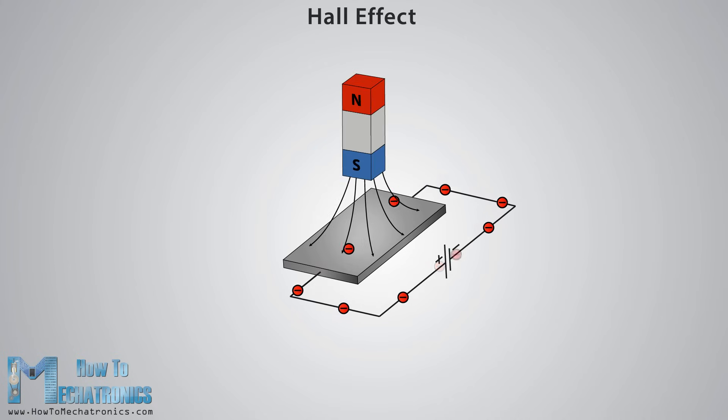Now if we bring some magnetic field near the plate we would disturb the straight flow of the charge carriers due to a force called Lorentz force. In such a case the electrons would deflect to one side of the plate and the positive holes to the other side of the plate.